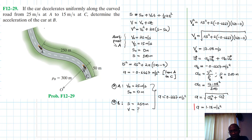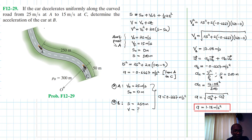So there we go. The magnitude of the acceleration at point B is 1.18 m/s². The vehicle is decelerating, with the acceleration reducing from point A to point B.